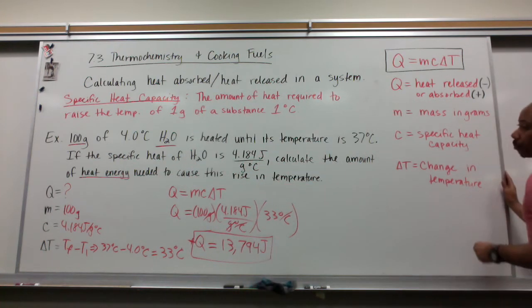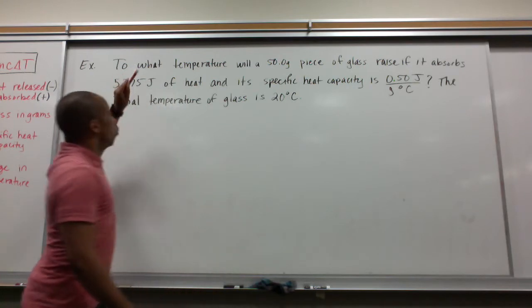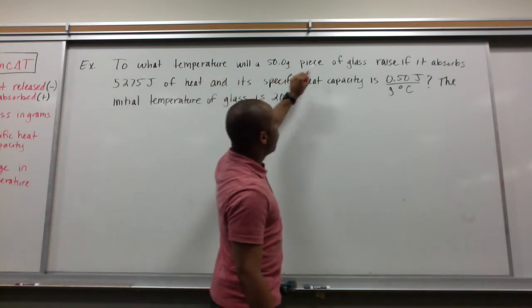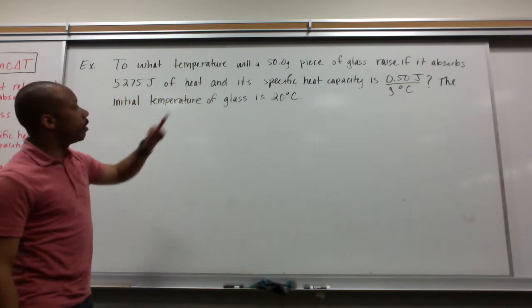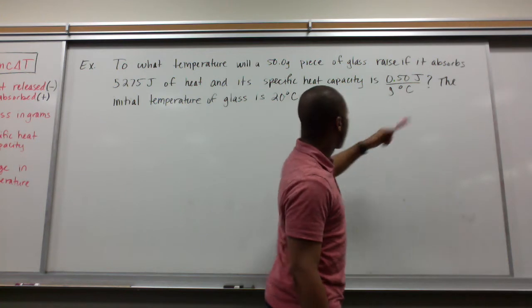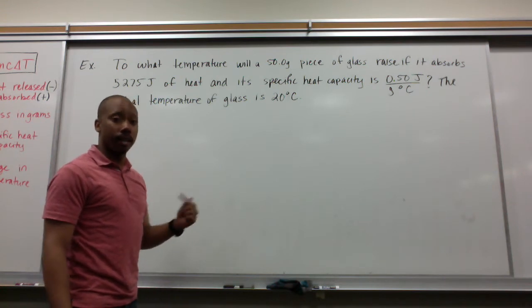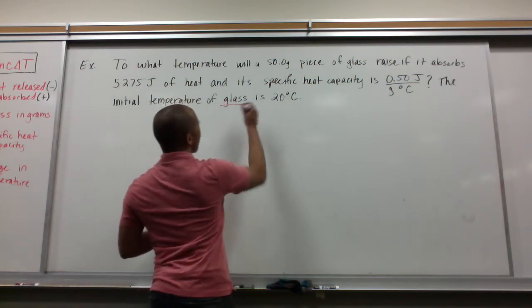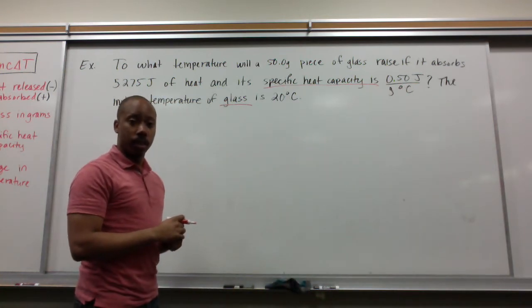Here's another example. It says, to what temperature will a 50 gram piece of glass raise if it absorbs 5,275 joules of heat? And its specific heat capacity is 0.50 joules per gram degree Celsius. The initial temperature of glass is 20 degrees Celsius. Now, here's what's different about this problem. We're not dealing with water. We're dealing with a different substance. Thus, that different substance, which is glass, has a different specific heat capacity, which is 0.5 joules per gram degree Celsius.